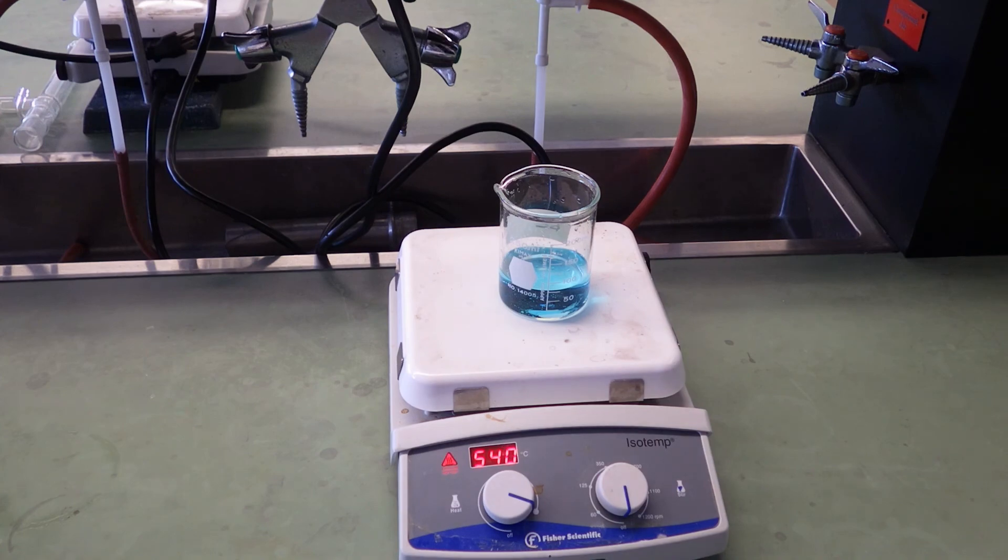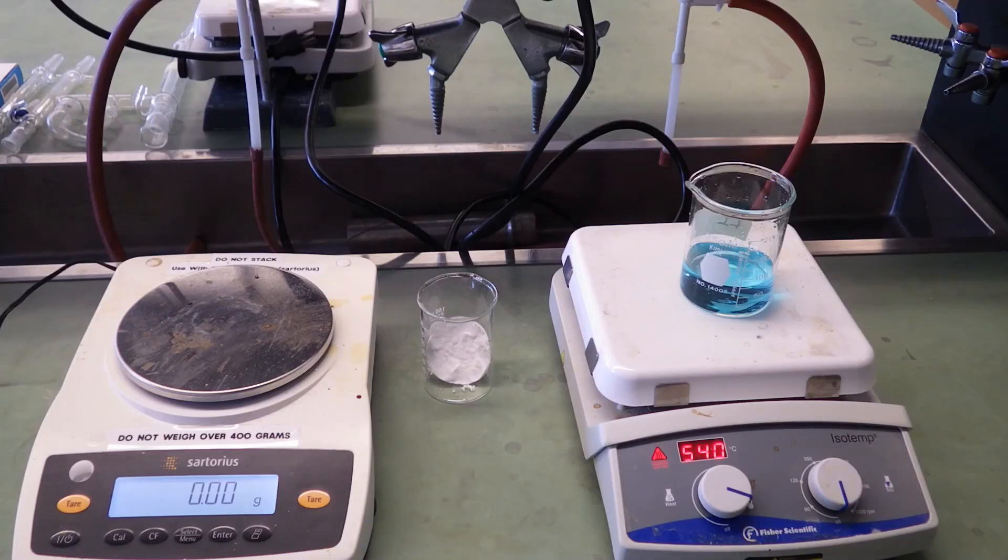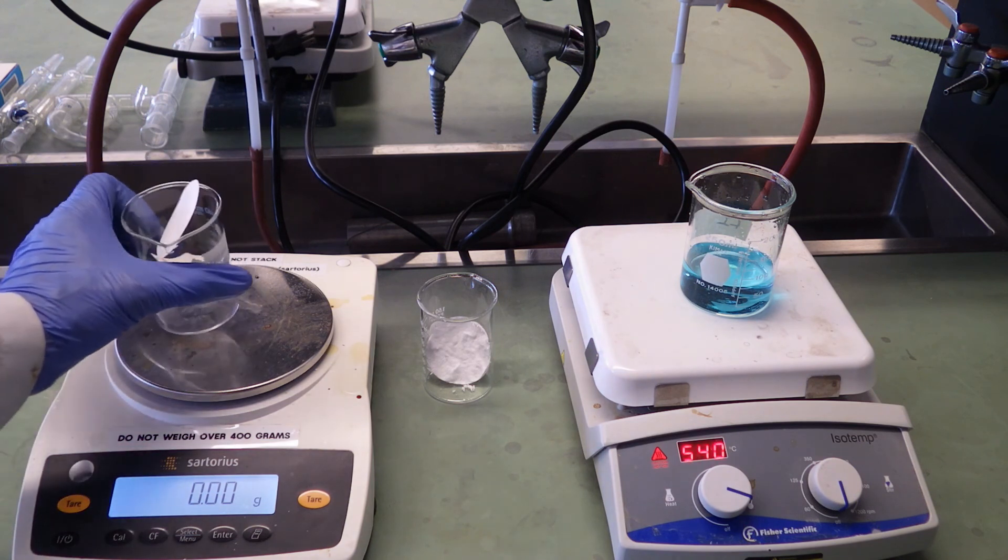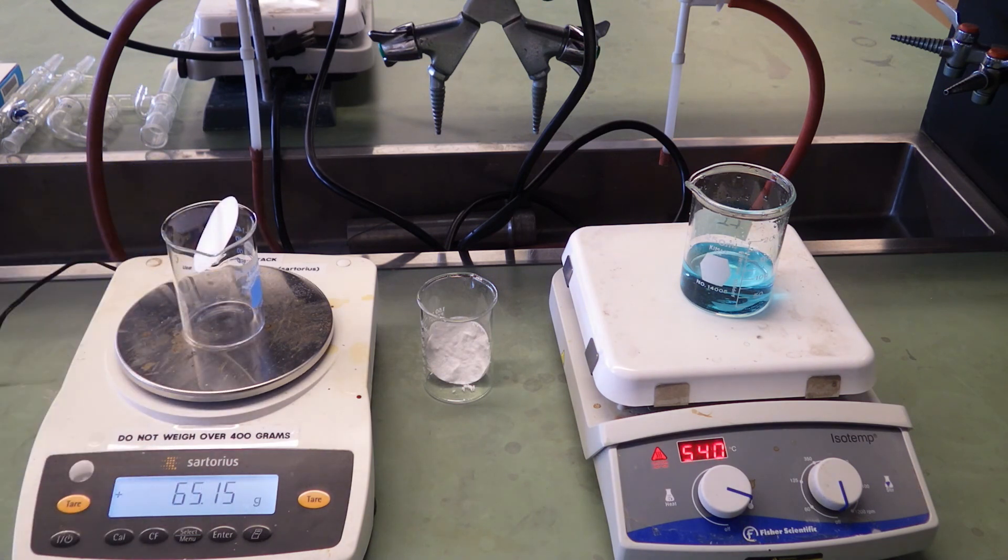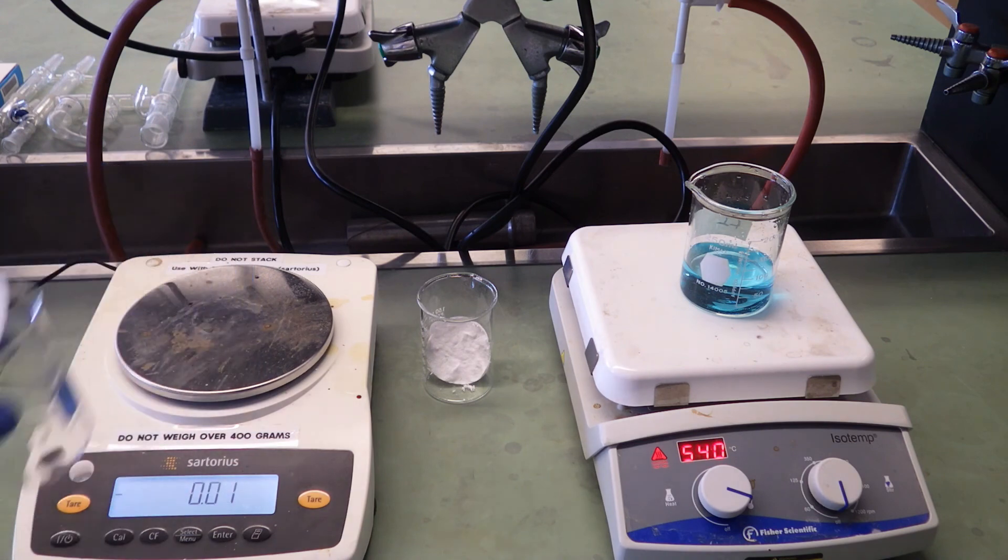We'll crank that temperature up pretty high so we don't have to wait too long. While we're waiting, we might as well weigh another beaker and filter paper for the CSP salt that we're going to collect later. Record that mass: 65.15 grams beaker plus filter paper.